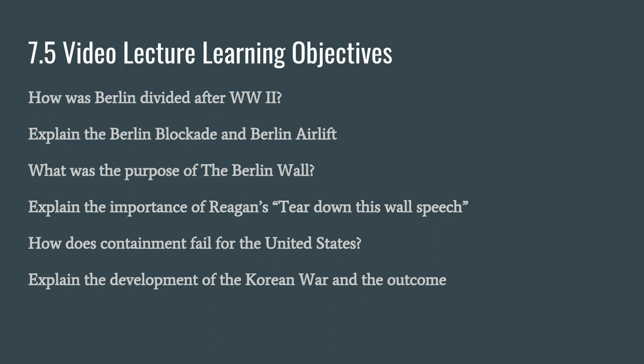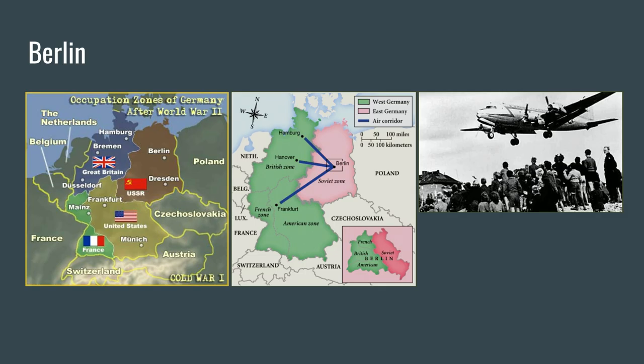How was Berlin divided after World War II? Explain the Berlin blockade and the Berlin airlift. What was the purpose of the Berlin Wall? Explain the importance of Reagan's 'tear down this wall' speech. How does containment fail for the United States? And explain the development of the Korean War and the outcome. So let's start with the city of Berlin.